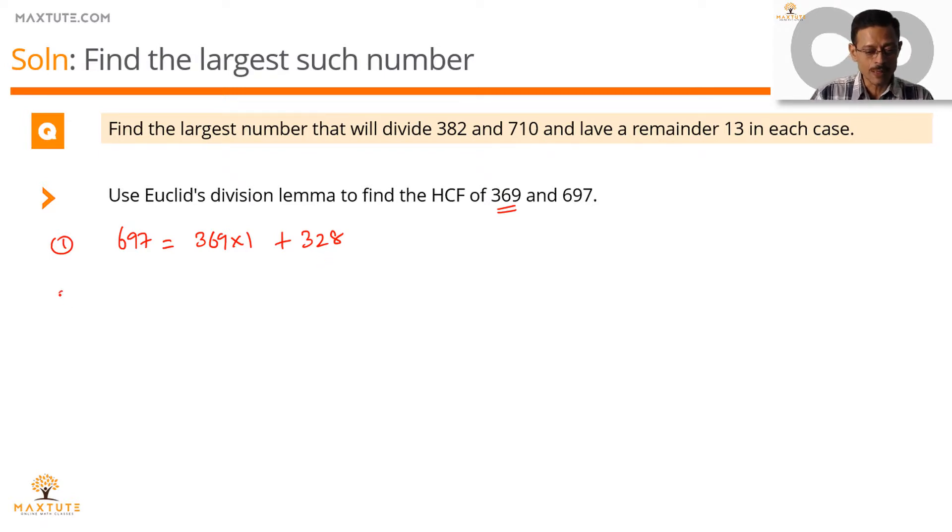So, let's recursively apply this. This time, we're going to be applying the lemma on 369 with our divisor being 328. So, 328 will go once in 369. It's 328 times one and we have a remainder. The remainder is equal to 41. We have a remainder in this step, so let's recursively apply it a third time.